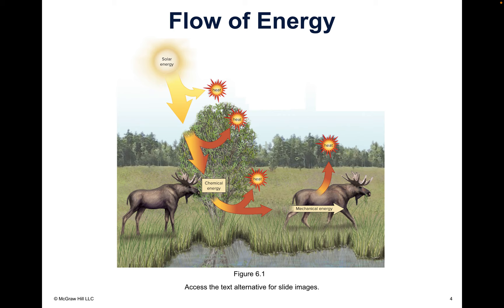This is the flow of energy through an ecosystem. It's discussing how the sun gives energy to the plants. The plants grow and give energy to the animals. They grow and get big and put off heat. It's one big cycle.